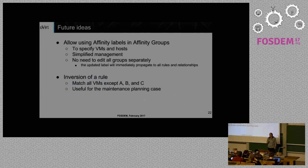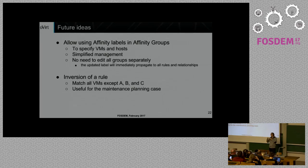For future ideas: we want to let you use affinity labels inside the affinity group dialog, so all VMs with a given label are automatically part of the affinity group without having to select them one by one. If you add a VM to the label, the whole group automatically applies to it. I was also thinking about inversion of a rule — you might want to say, run no VMs on this host except this group, to drain and decommission it while keeping only specific important VMs running there.